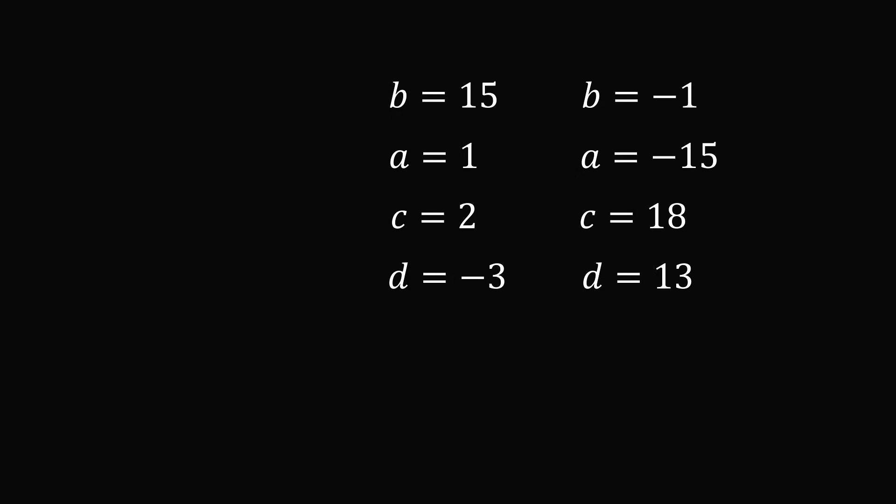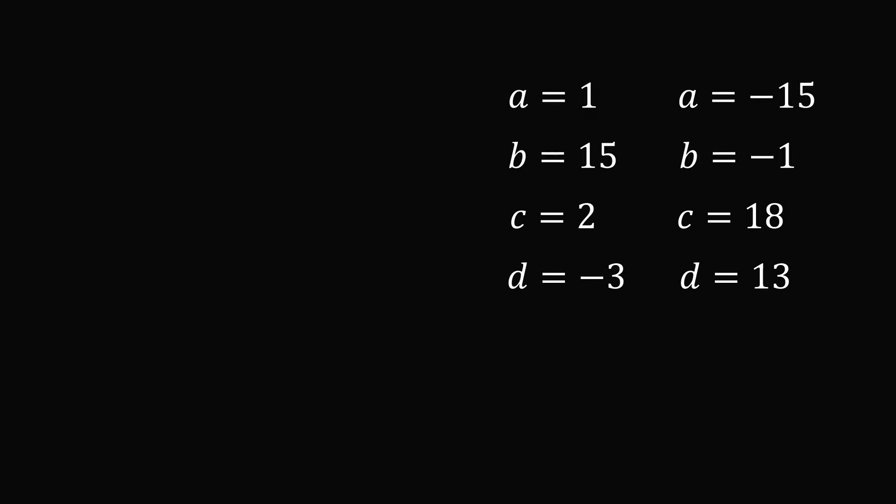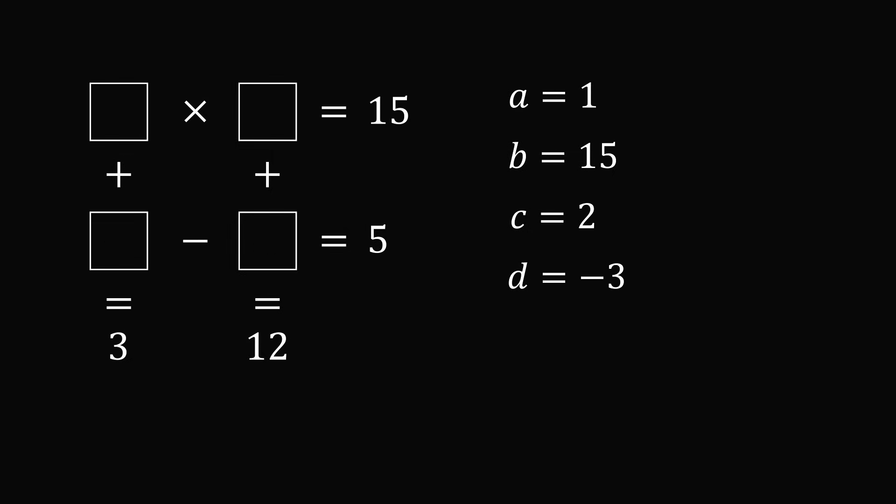Let's now just substitute it back into the original puzzle and verify that we do, in fact, have correct solutions. So, we have our grid and let's look at one possibility. So, we just put these numbers in and we can see we do, in fact, have a solution. a is equal to 1, b is equal to 15, c is equal to 2, and d is equal to minus 3 is a solution.